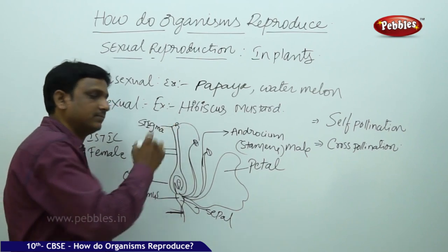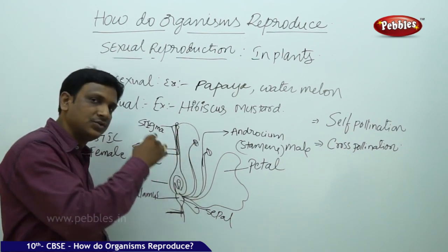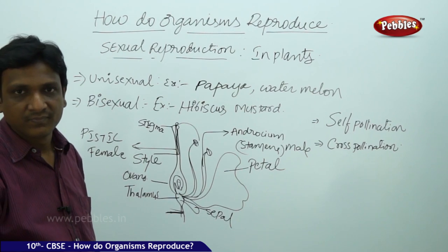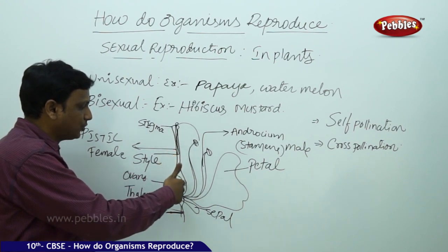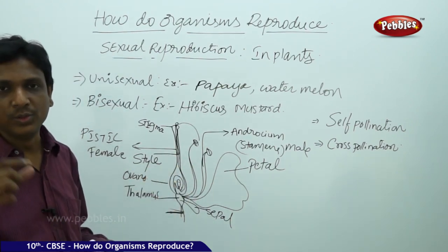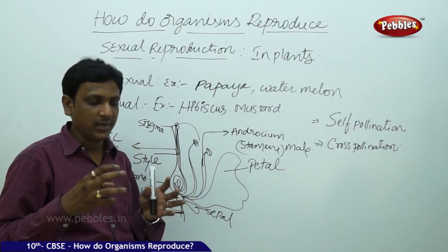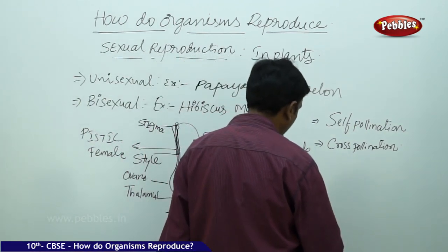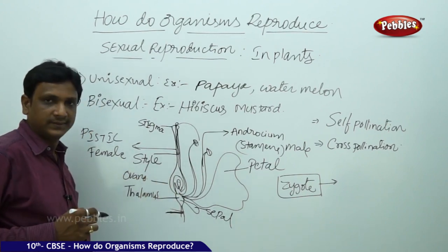The stigma has a sticky substance which enables the pollen to stick. Once the pollen sticks to the stigma, it produces a tube called the pollen tube, which grows and extends into the ovary. The male gametes present in the pollen travel through the pollen tube, pass down, and finally reach the ovule. Inside the ovule, the female gametes are present, and the male gamete fuses with the female gamete to form the zygote.